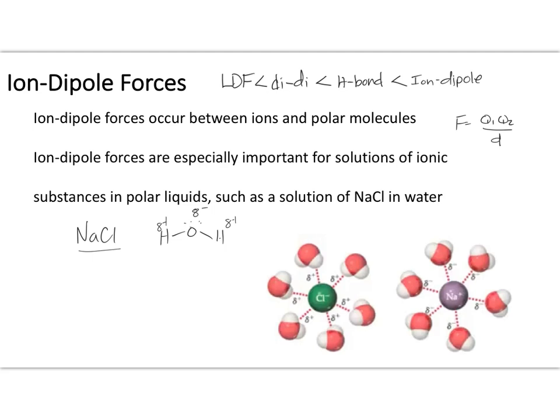Compared to dipole-dipole interactions or hydrogen bonding — where interactions occur between molecules with partial negative and partial positive charges — in ion-dipole interactions, one component has a full +1, +2, +3, or -1, -2, -3 charge. That is a bigger charge, and if we increase the charges we increase the attractive forces. If we increase the attractive forces, we increase the intermolecular forces. So ion-dipoles are stronger intermolecular forces than the others because we have an overall larger charge interaction.